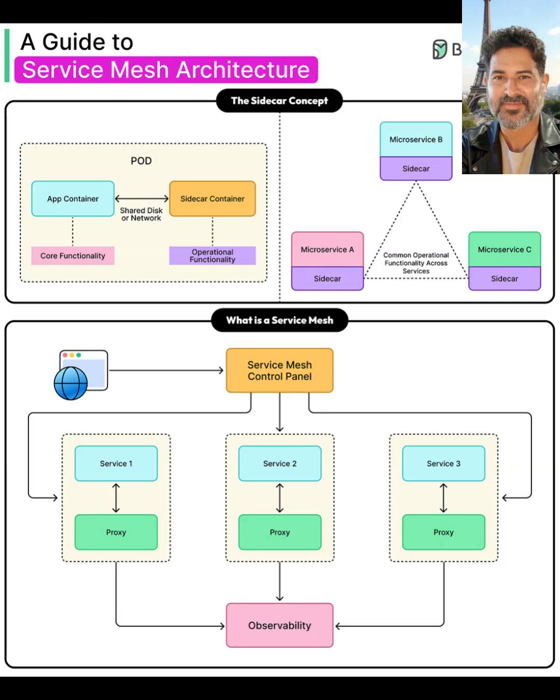In a typical Kubernetes pod, you have an app container that holds the core functionality of your service, and alongside it you run a sidecar container that provides operational functionality such as networking, security, and telemetry. These two containers share the same network namespace or disk, so the sidecar can transparently intercept and manage all inbound and outbound traffic for the app without changing the app code.